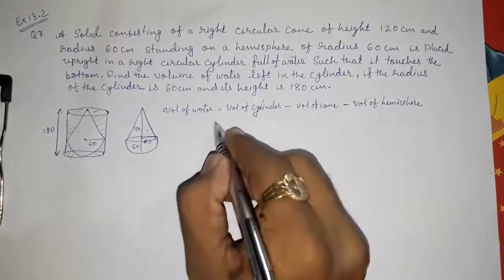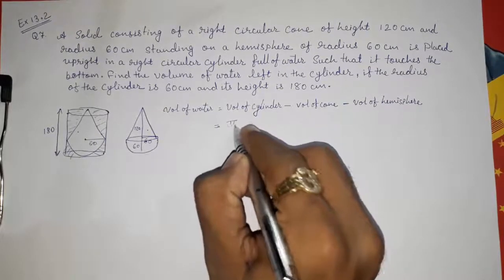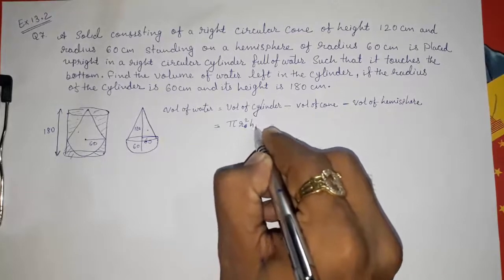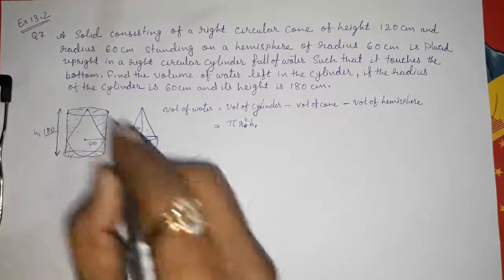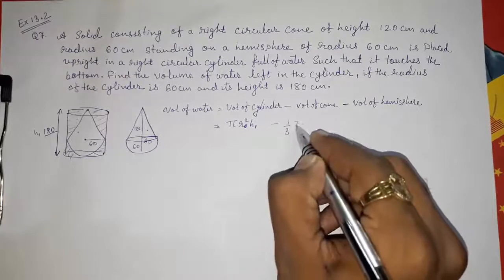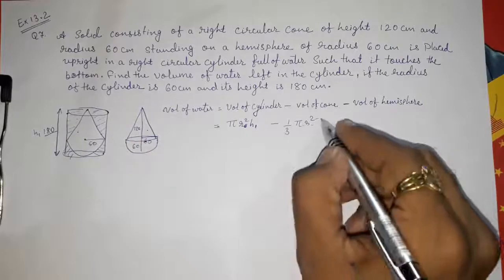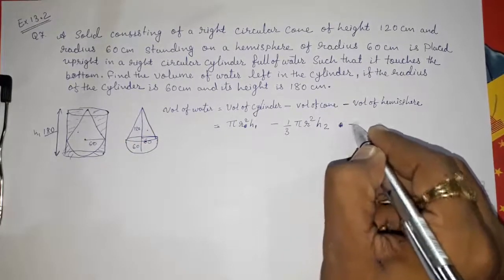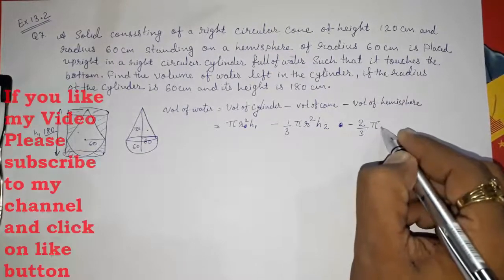I am going to take out π as a common factor. Volume of cylinder is π r² h — I'll call the cylinder height h1 and the cone height h2. Volume of cone is (1/3) π r² h2. Volume of hemisphere is (2/3) π r³.